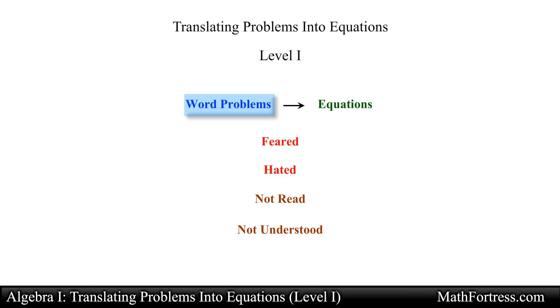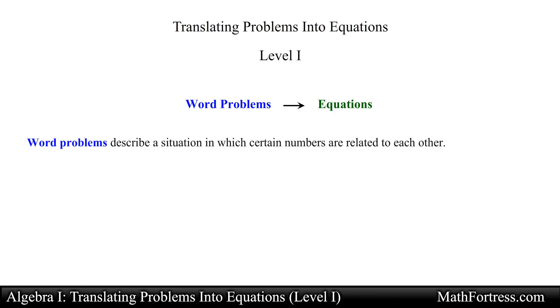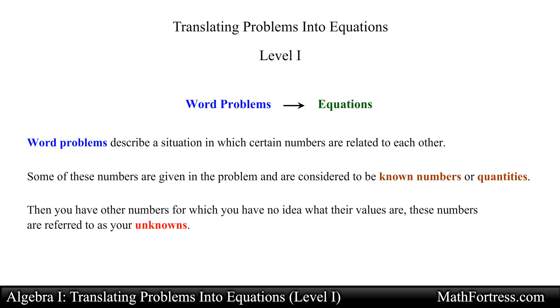The best strategy to tackle word problems head on is by having a plan and sticking to it. In general, word problems describe a situation in which certain numbers are related to each other. For the most part some of these numbers are given in the problem and are considered to be known numbers or quantities. Then you have other numbers for which you have no idea what their values are, these numbers are referred to as unknowns. You must determine their value by using the facts of the problem.